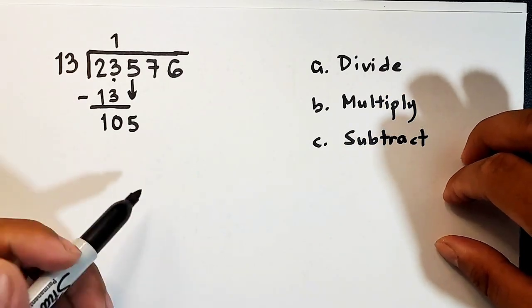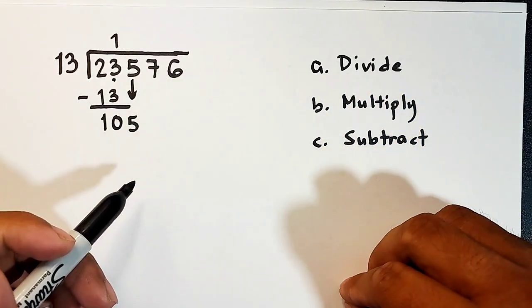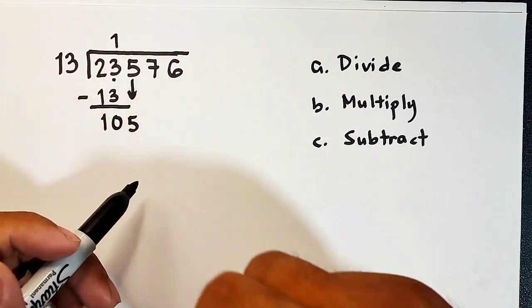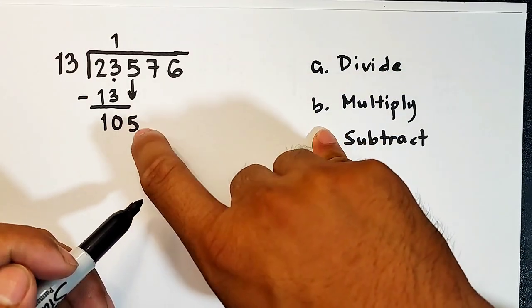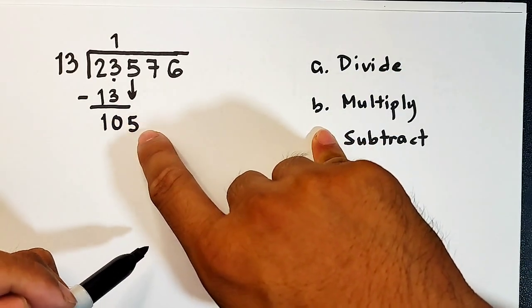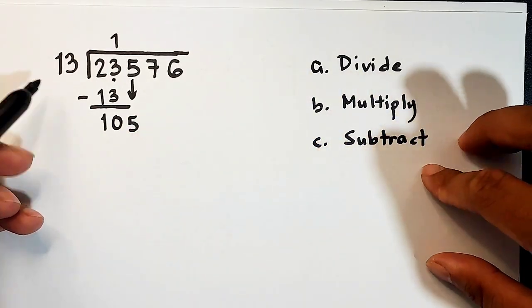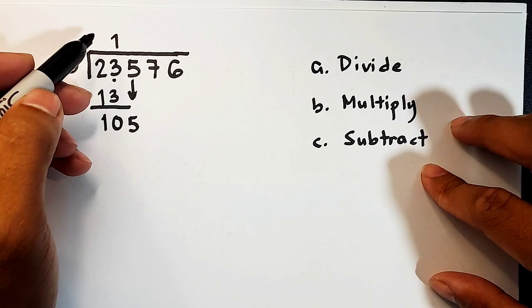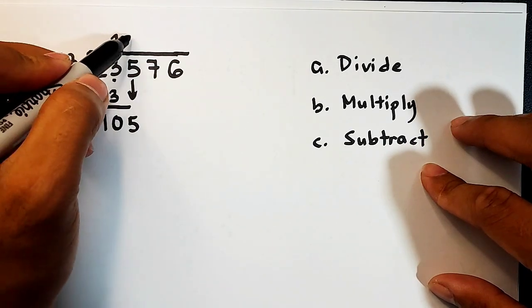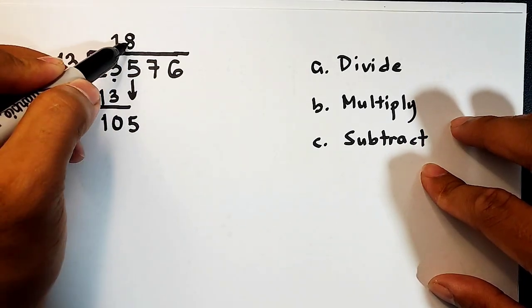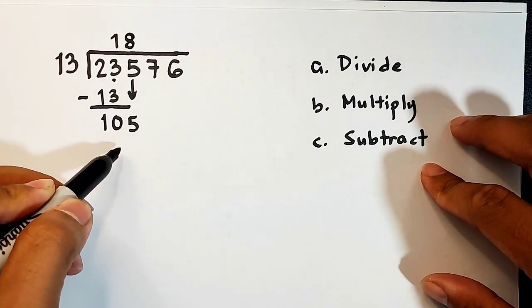So how many 13s do we have inside 105? Other people use trial and error. They're multiplying 13 by numbers until they get the one closest to 105. And this time, 105 divided by 13 is definitely equal to 8.